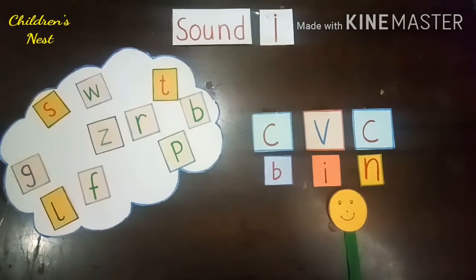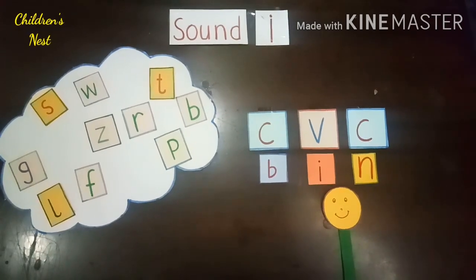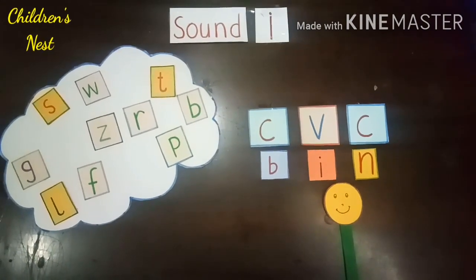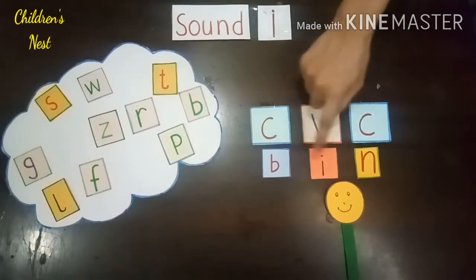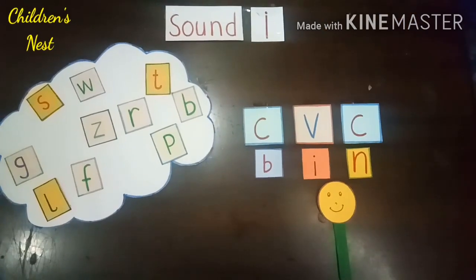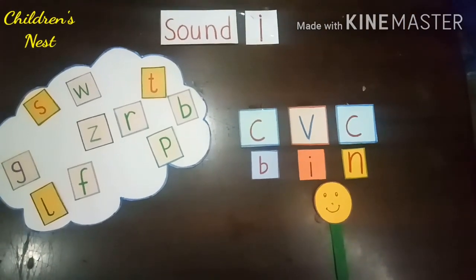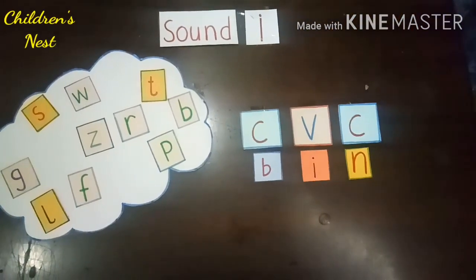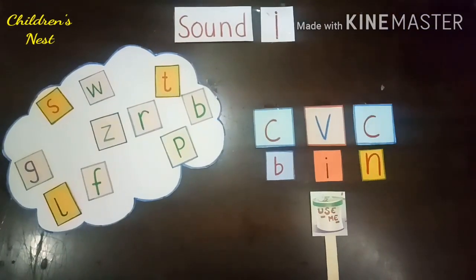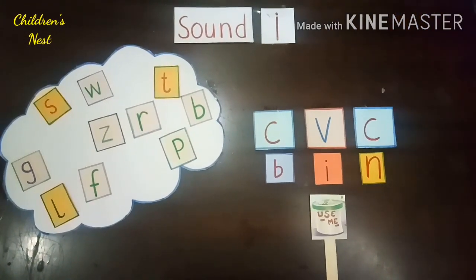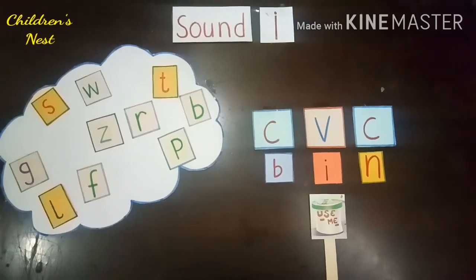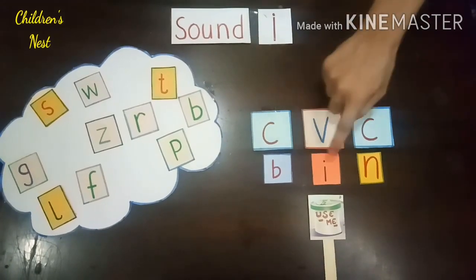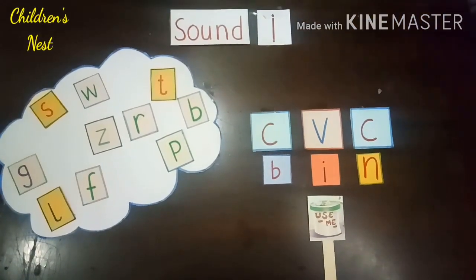Then sound B came out of the cloud and said, 'Let me also play with you, I am also alone.' They said, 'Okay, you can also play with us.' And then all three formed a new word. Repeat after ma'am: B-I-N, 'bin'. So children, this is called blending of three-letter words, and these types of words are called CVC words — consonant, vowel, consonant — where the vowel is always placed at the center.